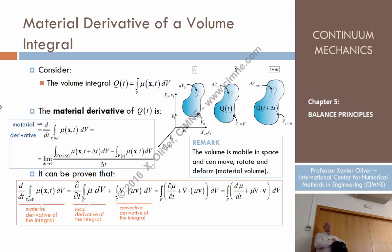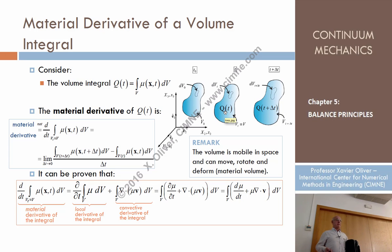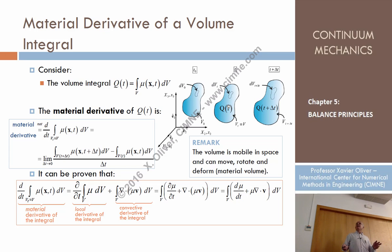For example, there can be sources of properties — such as a chemical reaction which produces heat. Even without motion, there can be an intrinsic source of the property. For instance, concrete during hardening produces heat, so the property heat can increase due to internal sources. The key point here is that, unlike the previous case, we are measuring the property in a volume that changes in time.